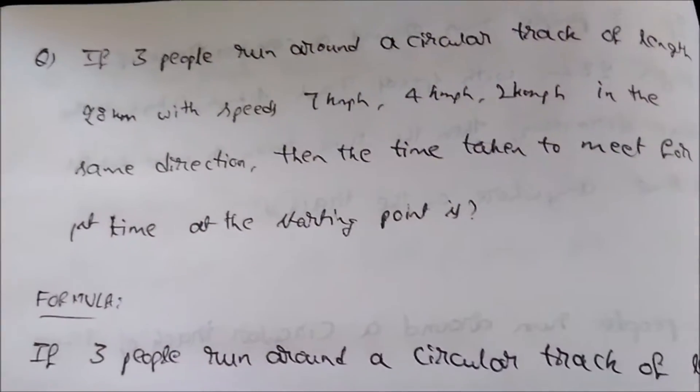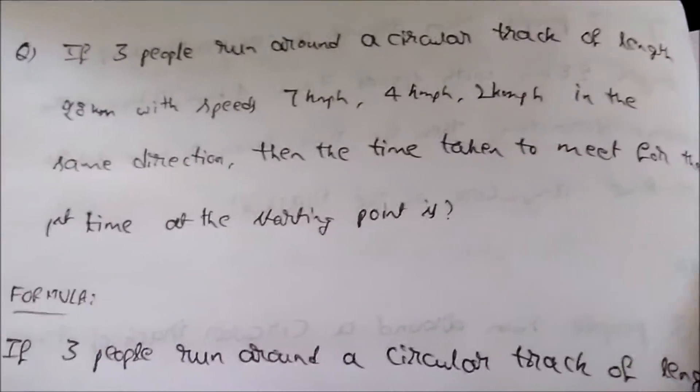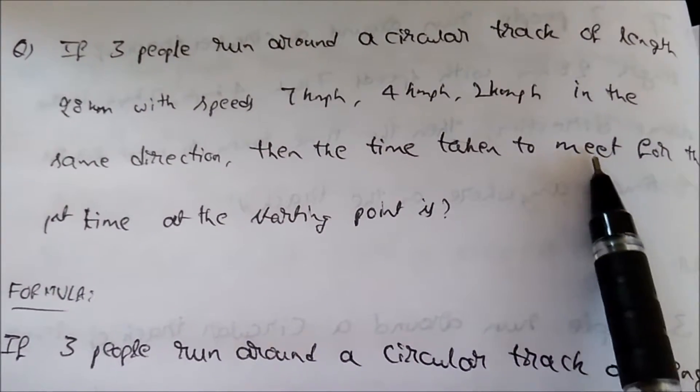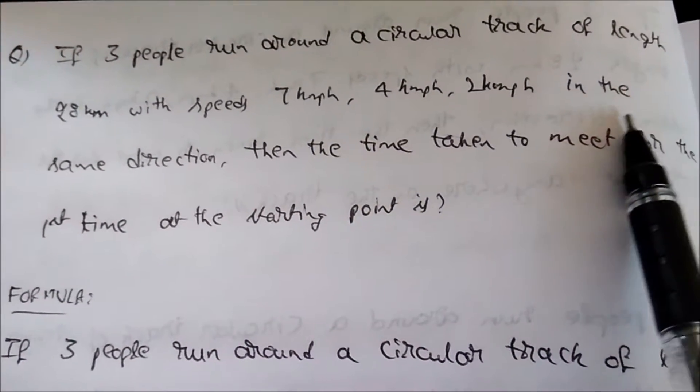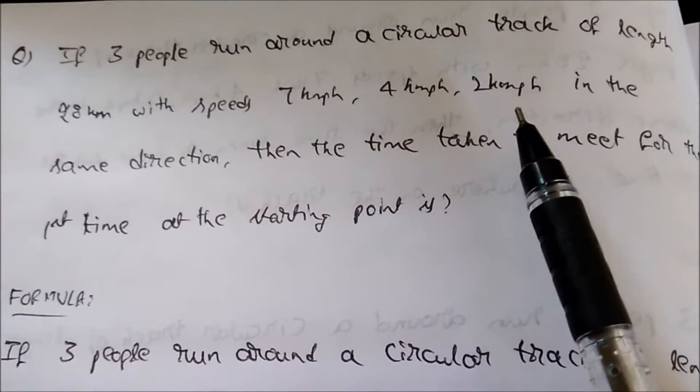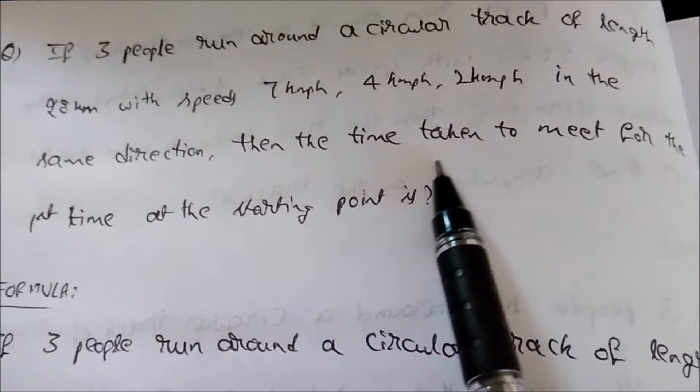Hi friends, today I have taken up a problem from the topic circular tracks. The question is: if three people run around a circular track of length 28 km with speeds 7, 4, and 2 kmph in the same direction, then the time taken to meet for the first time at the starting point is?